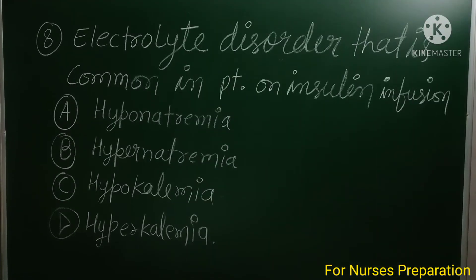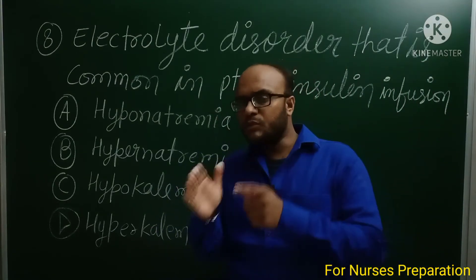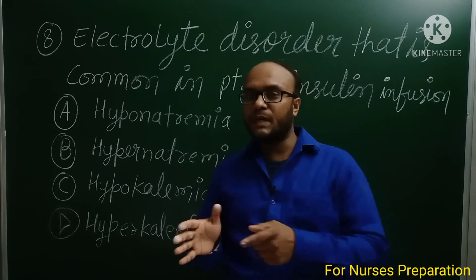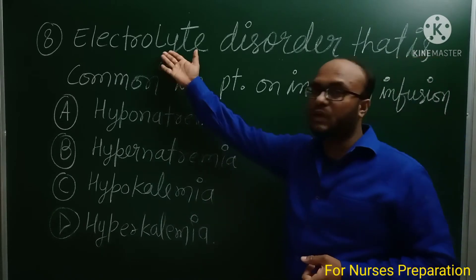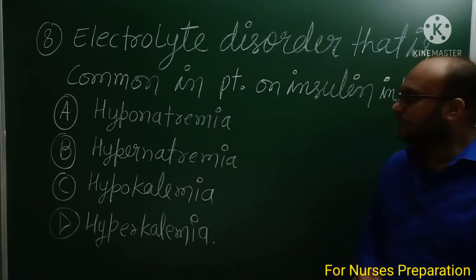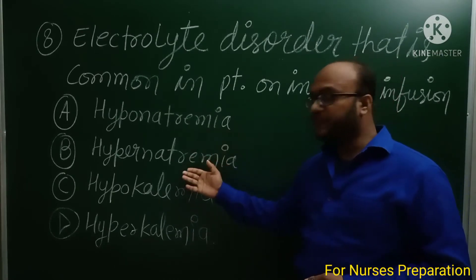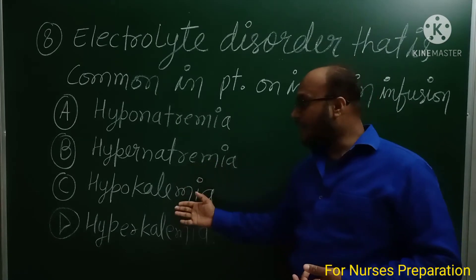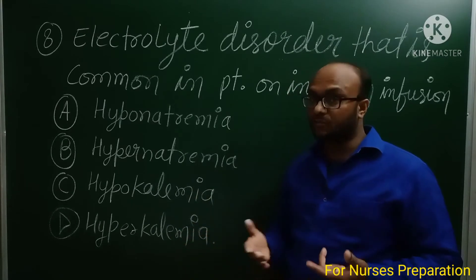Question number 8: What is the electrolyte disorder that is common in a patient on insulin infusion? When a patient is being given insulin via an infusion pump, which electrolyte disturbance can occur? Option A: Hyponatremia (low sodium), Option B: Hypernatremia (high sodium), Option C: Hypokalemia (low potassium), Option D: Hyperkalemia (high potassium).